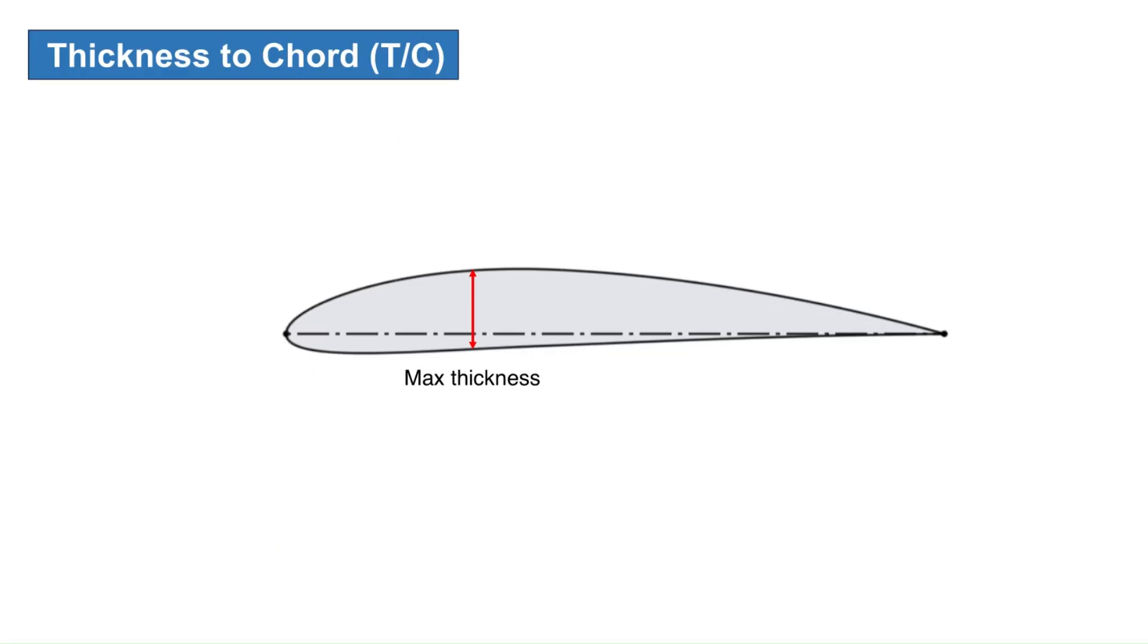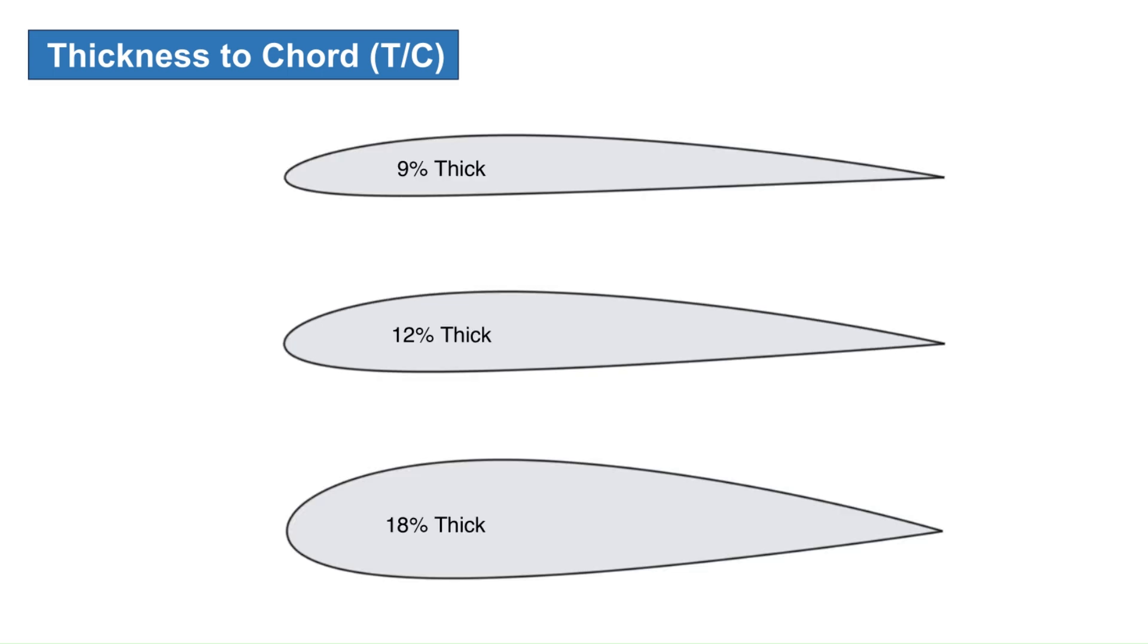Airfoil thickness is represented by the thickness-to-chord ratio. The maximum value of this ratio is used to define the airfoil thickness. For example, if an airfoil has a 12% T by C, its maximum thickness is 12% of the chord and is called a 12% airfoil.